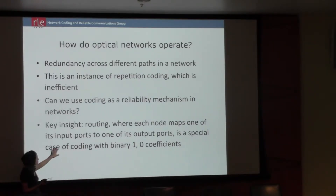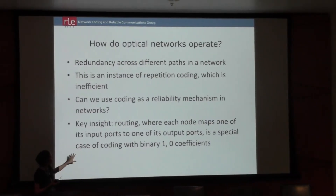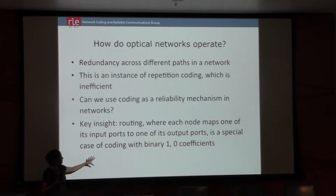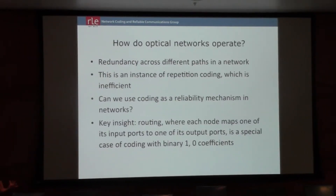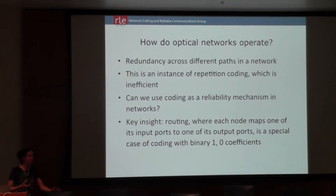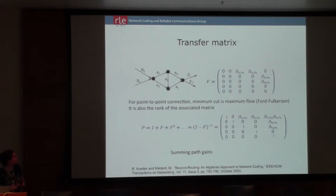If you have a background in information theory, you know that this is an instance of repetition coding. You say something twice; you didn't hear it on the first path, you heard it on the second. The first thing Ralph and I started thinking about: can we use coding as a reliability mechanism in networks? Can we take a very specific protocol — SONET for optical networks — and map it to a code? We decided if we could show that was a code, we'd spend at least one year working on it.